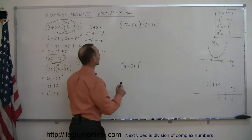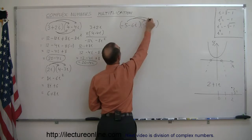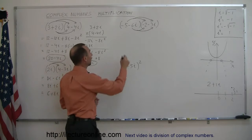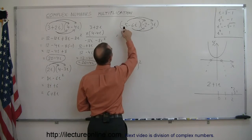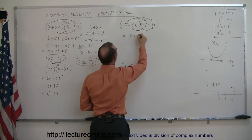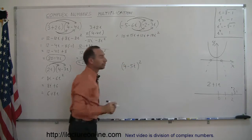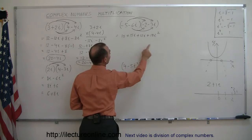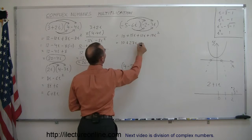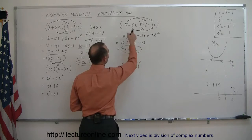Going on to the next example, we're going to multiply these two together, starting with negative 5 multiplied times the real and imaginary parts of the second number, then negative 6i multiplied times the real and imaginary parts. So this is equal to: minus 5 times minus 2, which is positive 10; minus 5 times minus 3i, which is positive 15i; minus 6i times minus 2 is plus 12i; and minus 6i times minus 3i is plus 18i squared. Now adding the imaginary parts together and turning i squared into negative 1, this becomes 10 plus 27i minus 18, so the answer is minus 8 plus 27i.